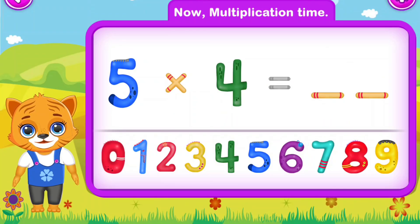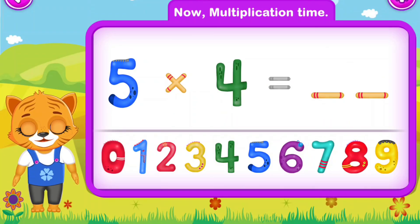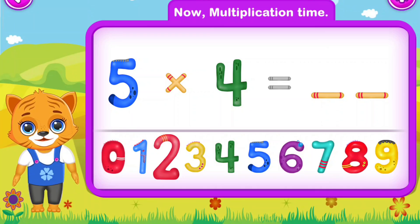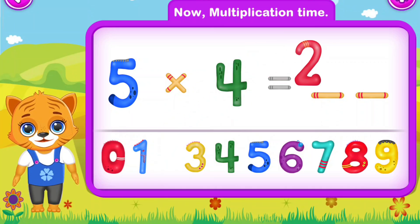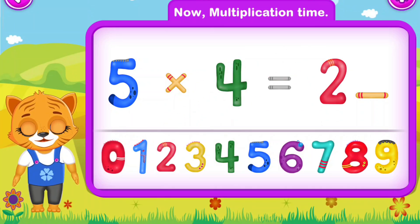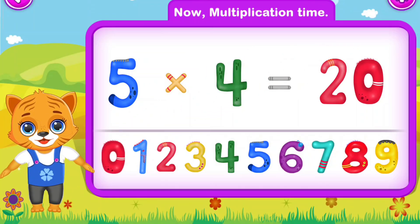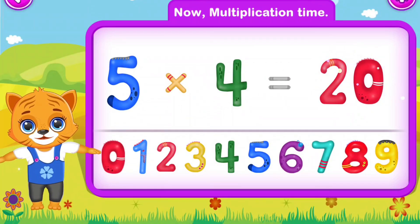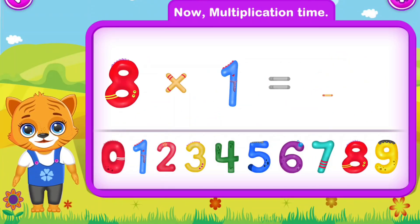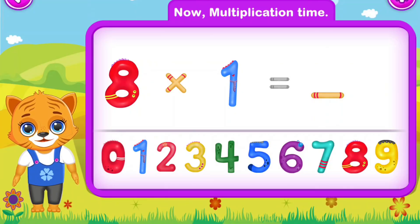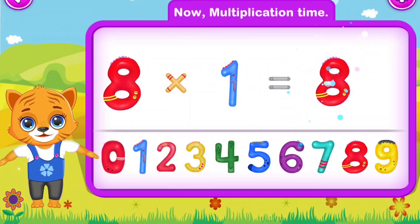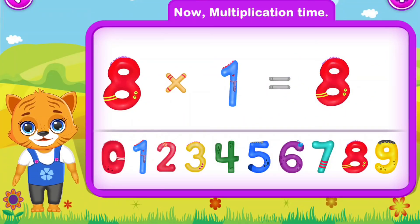Five multiply by four is equal to twenty. Wow! Eight multiply by one is equal to eight. Well done!